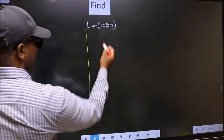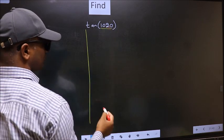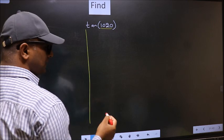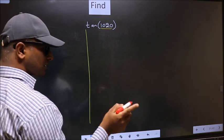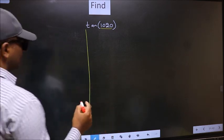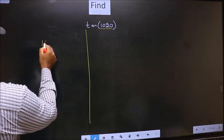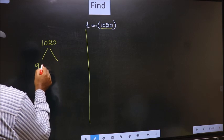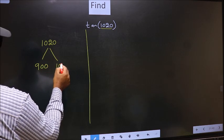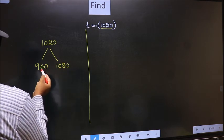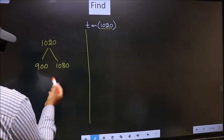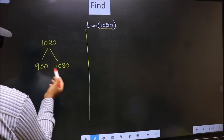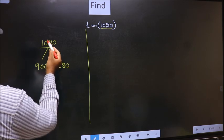Here we have 1020. Now we should check 1020 lies between which two multiples of 180. What I mean is, 1020 lies between 900 and 1080. This is 180 into 5 and this is 180 into 6. Between these two numbers, 1020 lies.